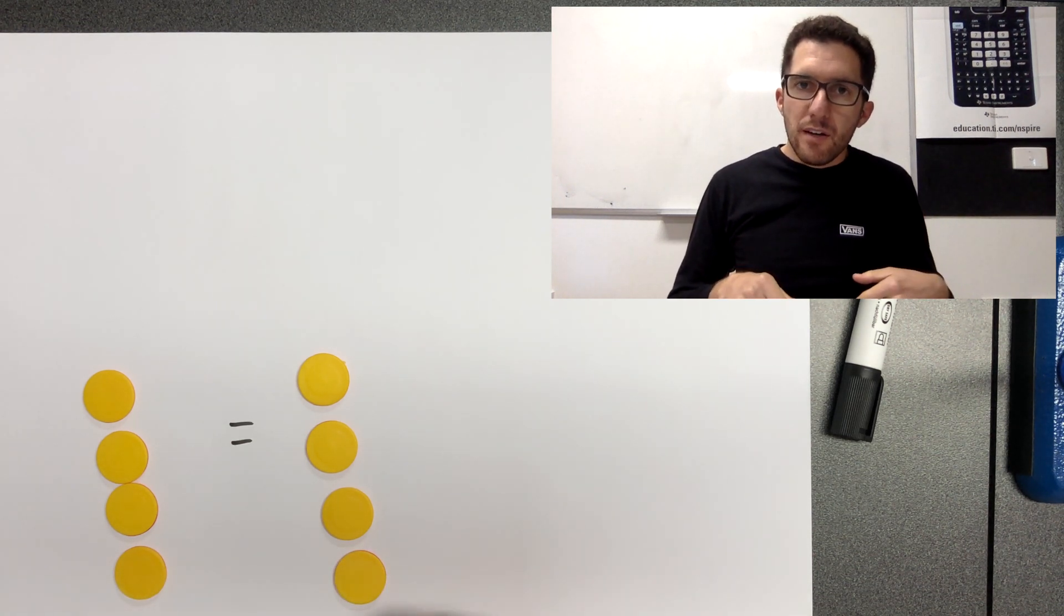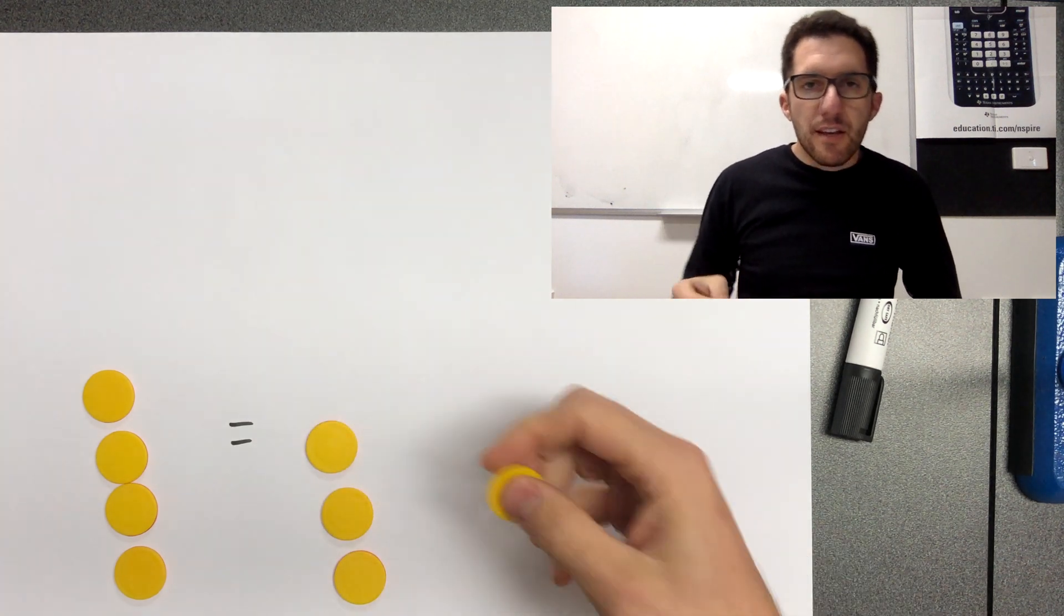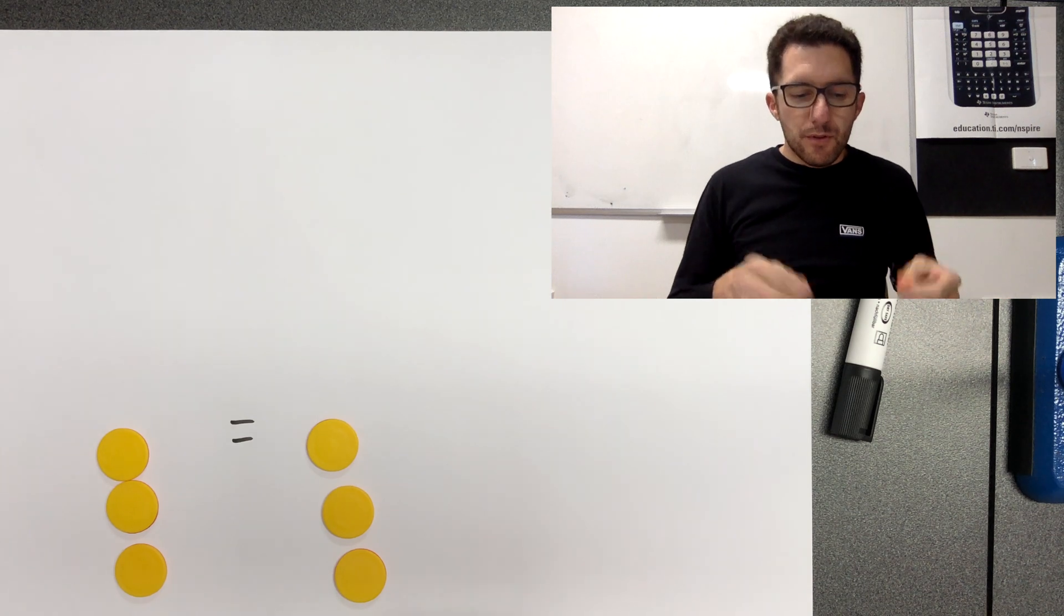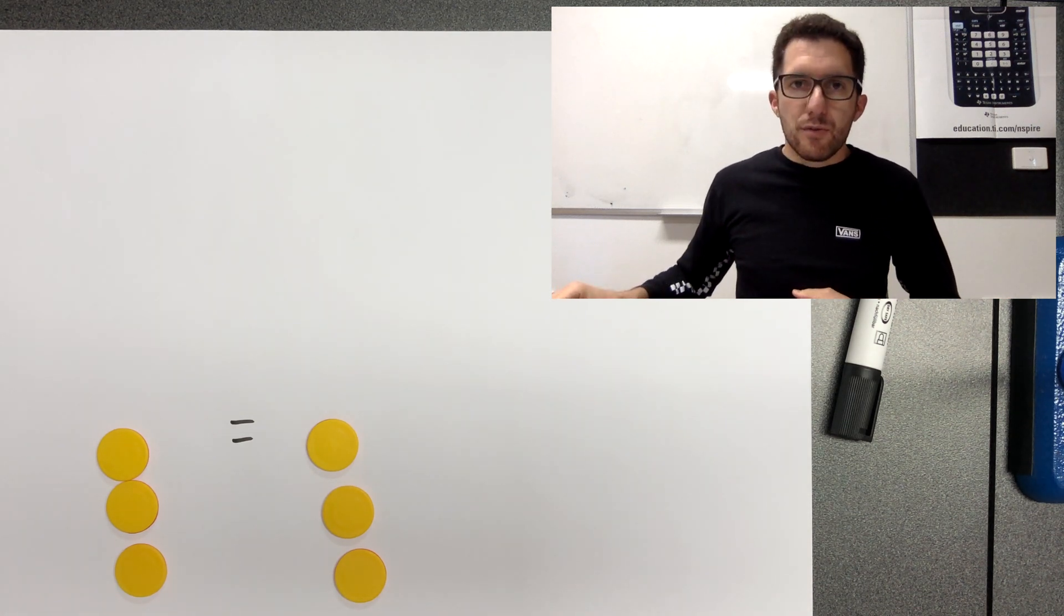And if I take one away, then I also need to take one away from the other side to keep it true. So we get back to three equals three. Okay, so hopefully all of that was pretty straightforward.